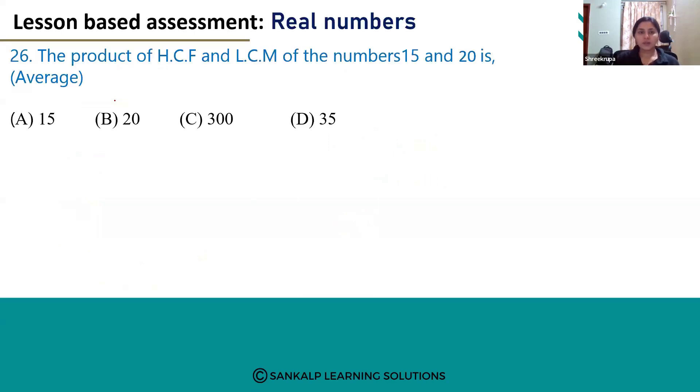Hello everyone. Let's see question number 26. The product of HCF and LCM of the numbers 15 and 20 is the product of HCF of 15 and 20 multiplied by LCM of 15 and 20.